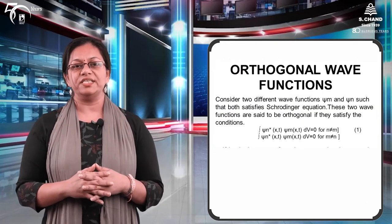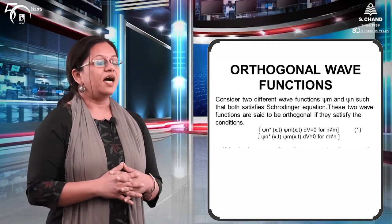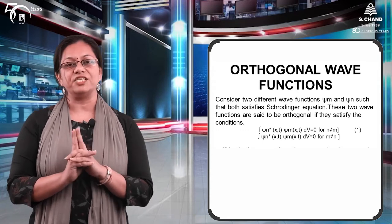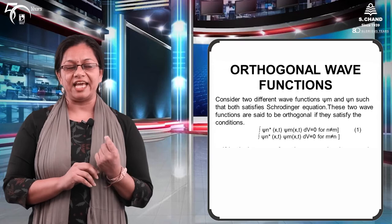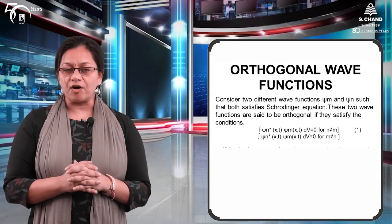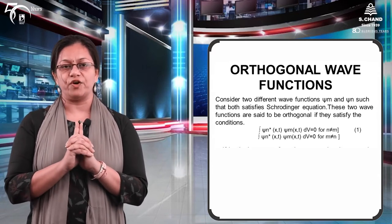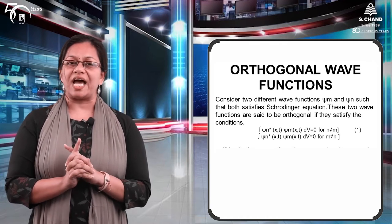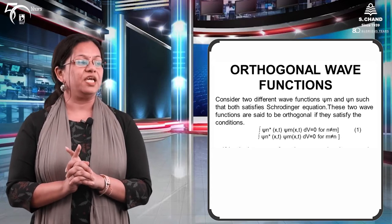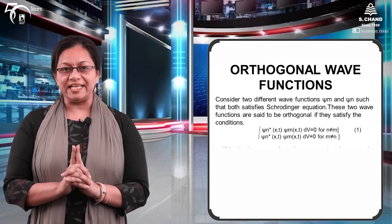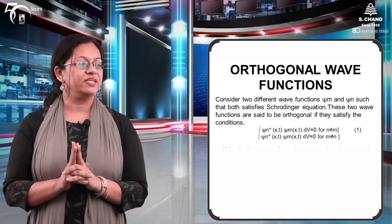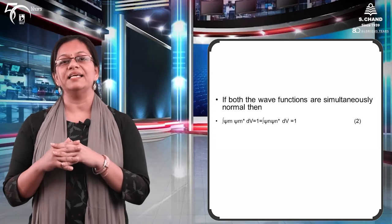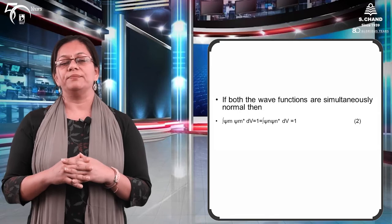Similar to normalization, there is the orthogonality condition — but this is for two waves. For two wave functions chi-m and chi-n (where n ≠ m), the integral of chi-m(x,t) into chi-n*(x,t) over a volume dv should be equal to 0. That is the orthogonality condition.